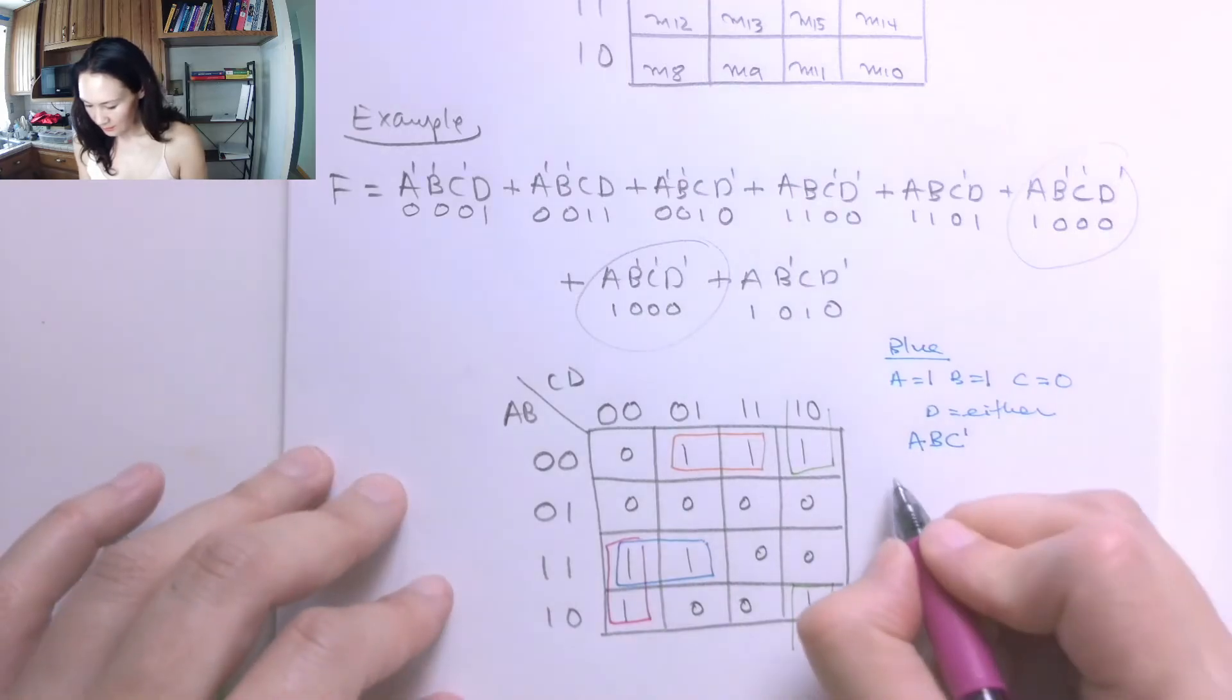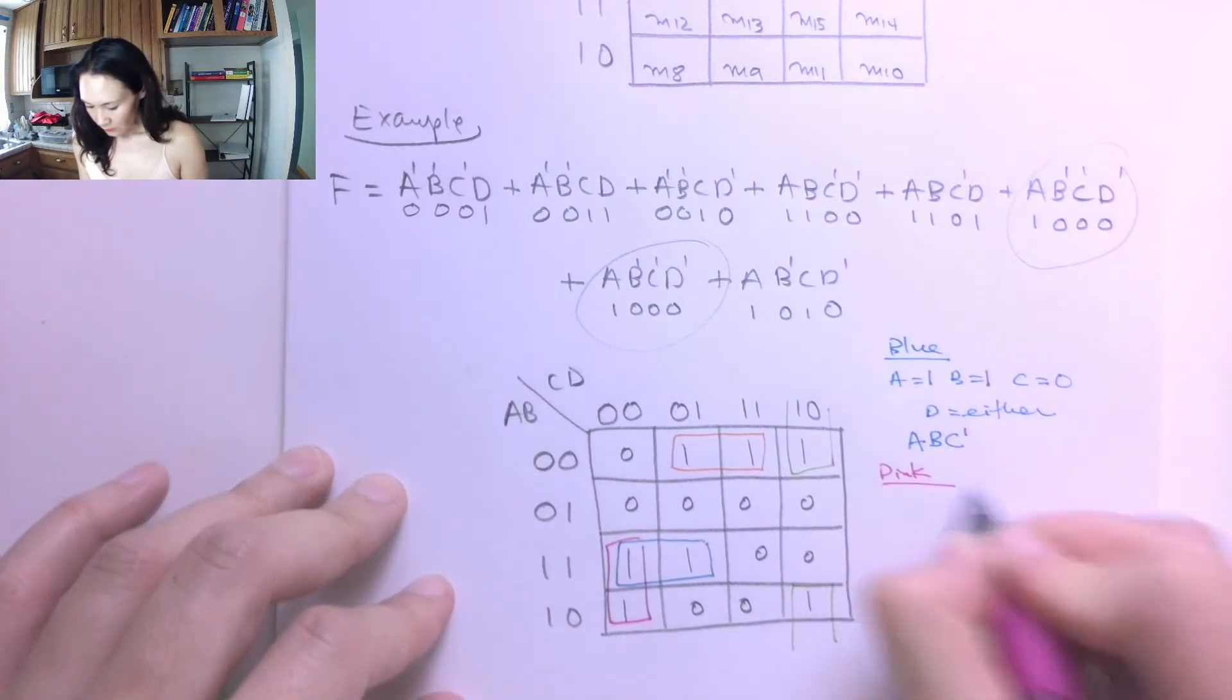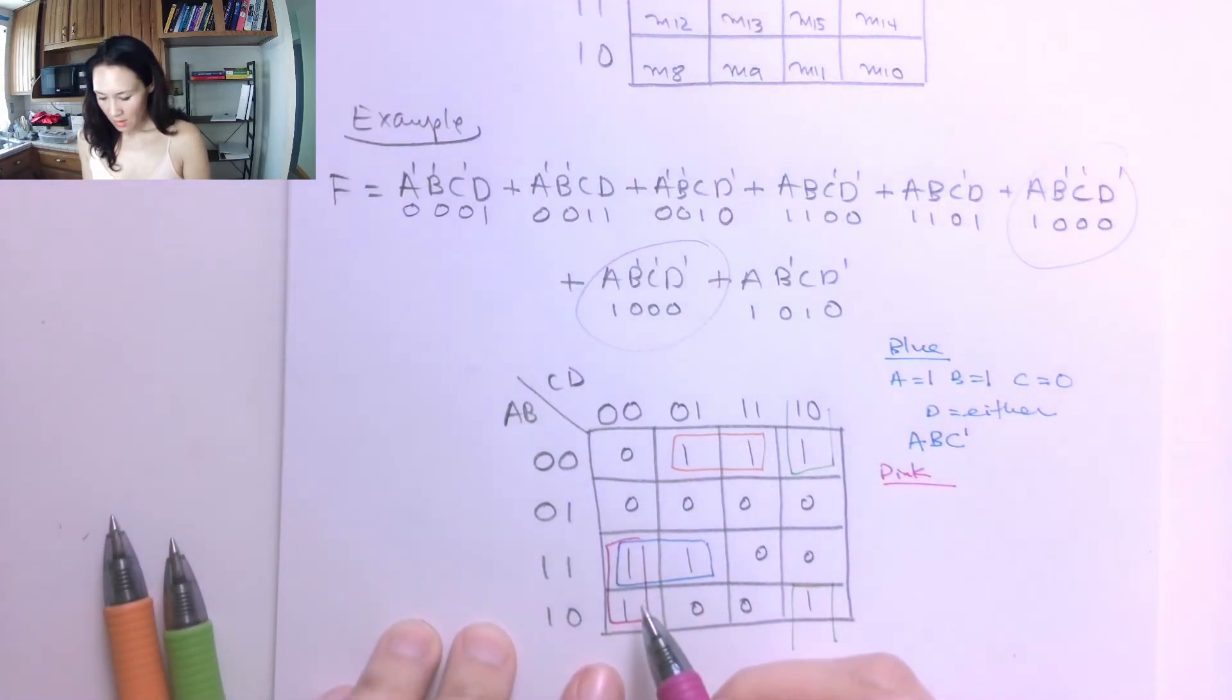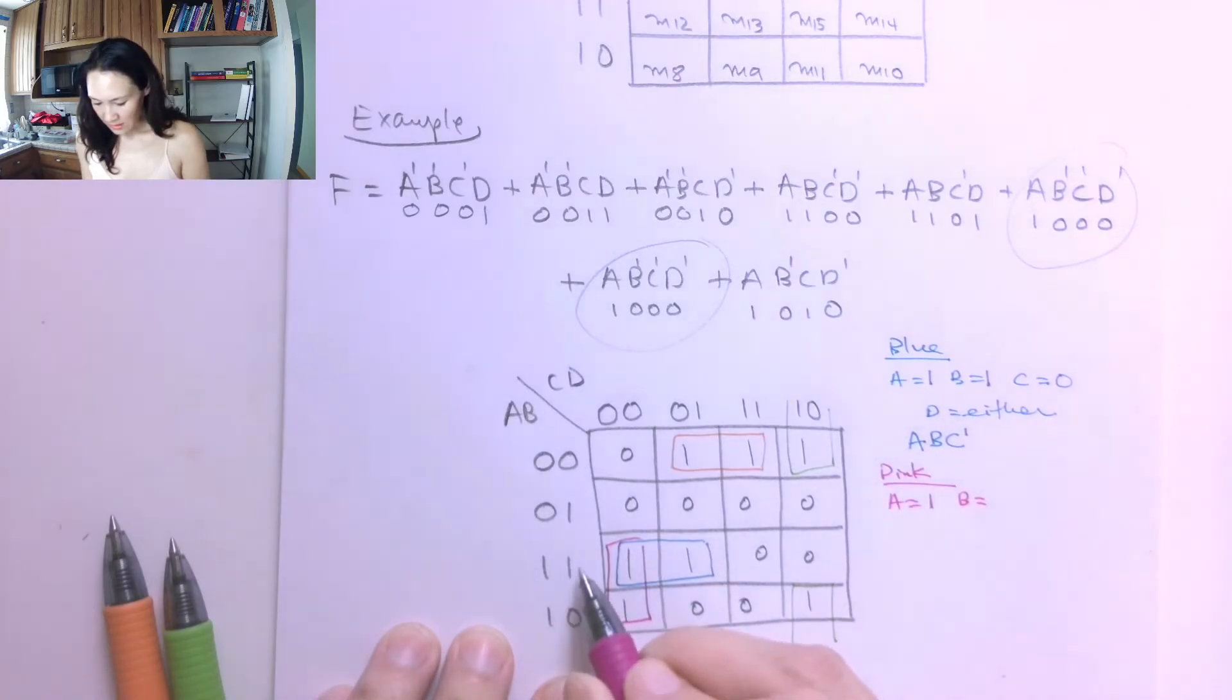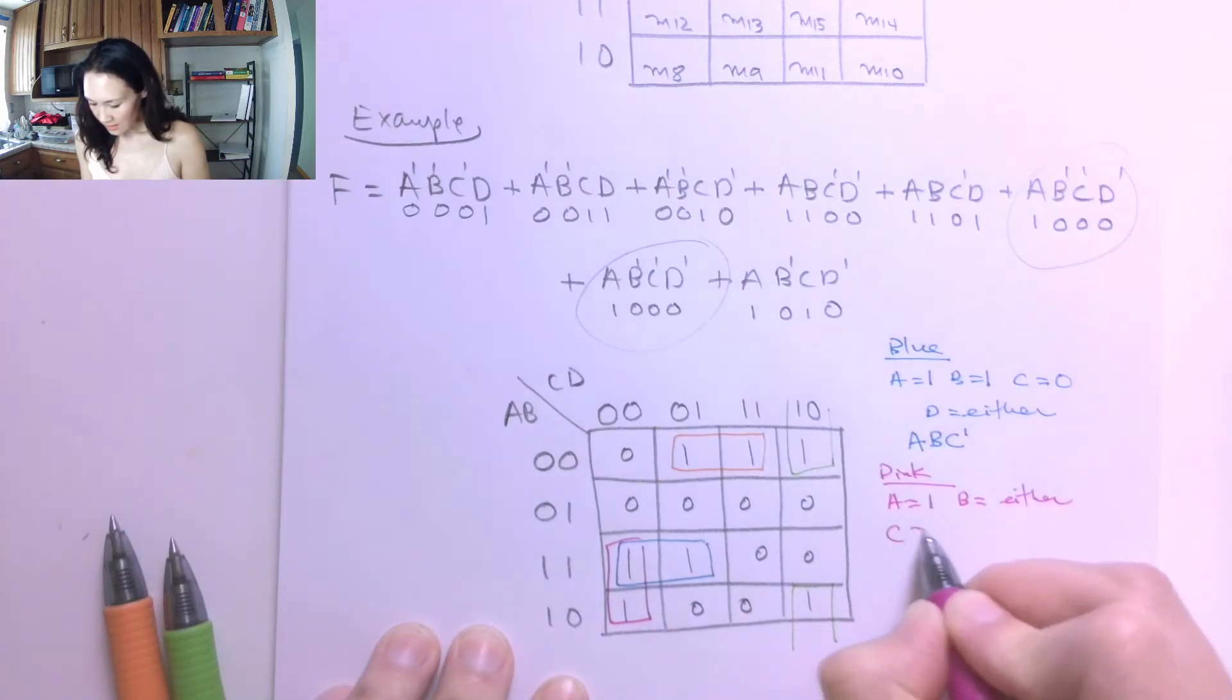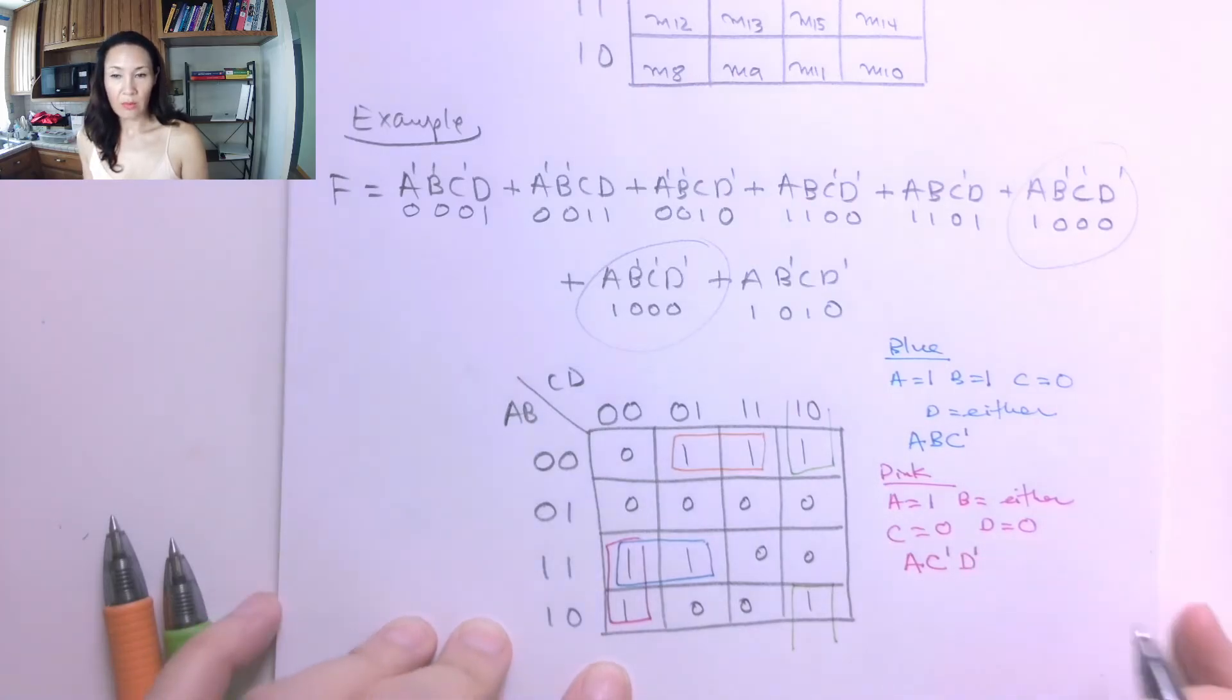Okay, great. So now let's do the pink. For the pink group here, what do I have? I have A for this pink group is 1 in both those cases. I have B can be either 1 or 0, and I'll get this group here. So that's either. I have C is 0, and I have D is 0. So this product term is going to be A. I don't need a B, because it can be either 0 or 1, but I need C to be 0, and I need D to be 0. So I put complements on those literals.